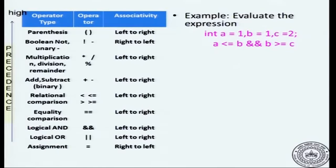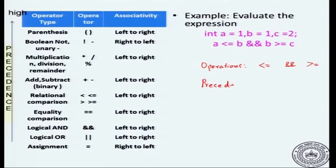Let us go through it systematically. The operations are: less than or equal to, then we have the logical AND operation, and greater than or equal to. Of these, the relational comparison operations — less than or equal to and greater than or equal to — have greater precedence over the logical AND.